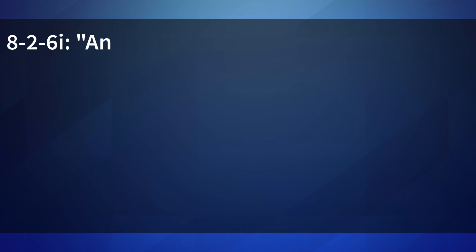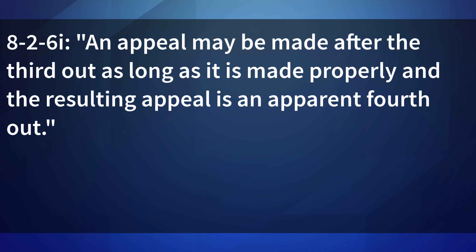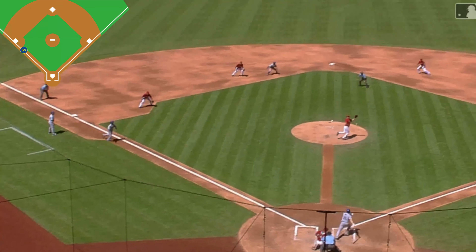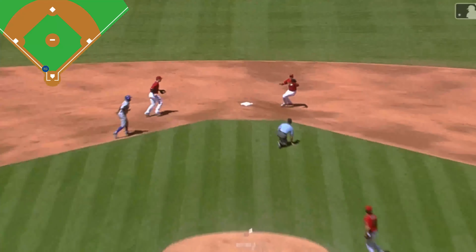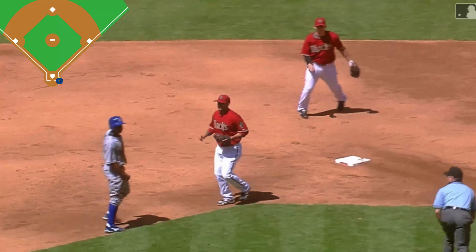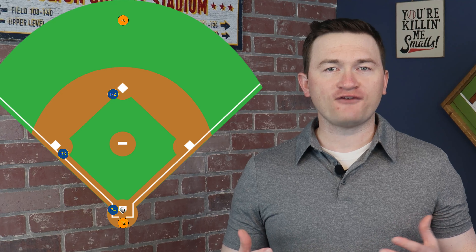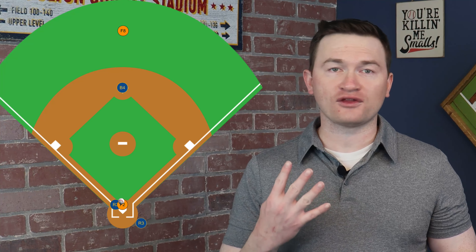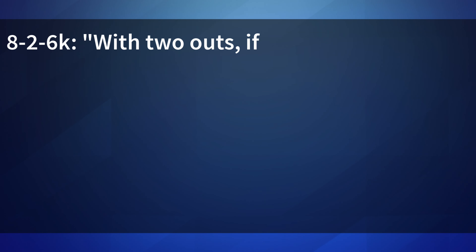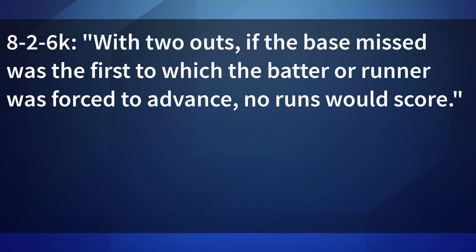We then move on to Paragraph I and 4th out appeals. An appeal may be made after the 3rd out as long as it is made properly and the resulting appeal is an apparent 4th out. The importance here is that if an inning ends on a time play, such as a tagout, the defense can still appeal a miss of a bag in the hopes that a 4th out would result in fewer runs scoring. For example: B4 hits a single to F8, R3 scores, and R2 is thrown out at the plate to end the inning. B4 advances to second but misses first base. The defense could appeal the miss of first for a 4th out. Under 8-2-6-K, with two outs, if the base missed was the first to which the batter or runner was forced to advance, no runs would score.